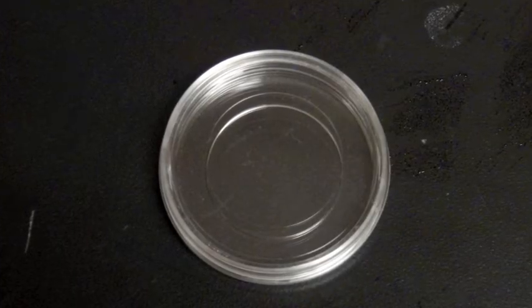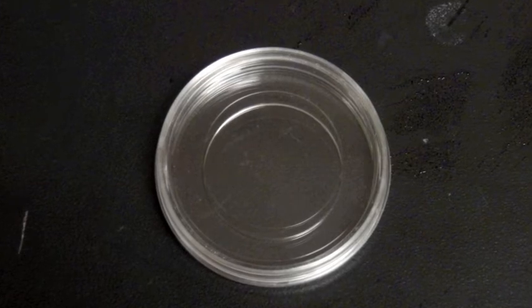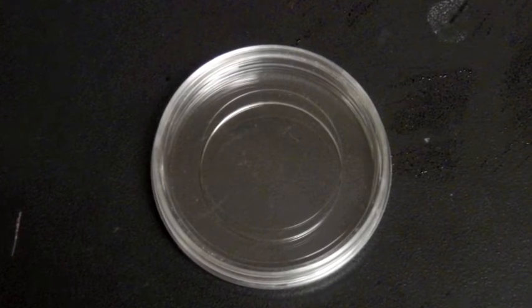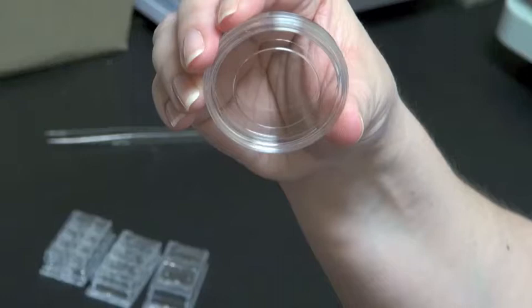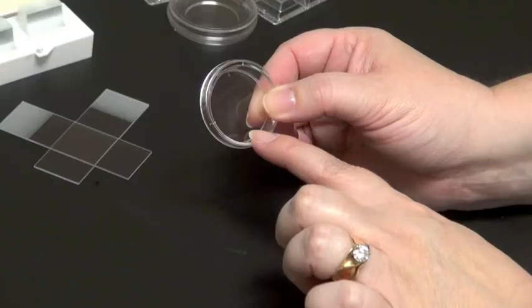Also available are mat tech or chambered petri dishes. These have, you'll notice, an inset of a cover glass bottom so we can grow the cells right on top of the cover glass and then image directly through.